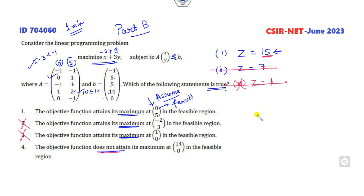Now look at the first and fourth option: it does not attain its maximum. We will check firstly whether it's a feasible solution or not. -14 less than -1, 1 satisfied; 0 less than 5 satisfied; 0 less than 5 satisfied; -14 less than or equal to 5 satisfied; 14 equals 14 satisfied; 0 satisfied.